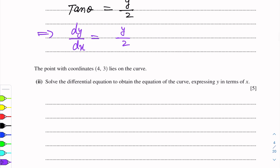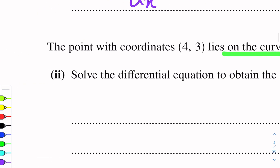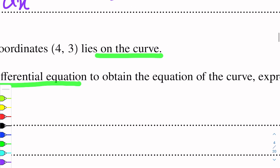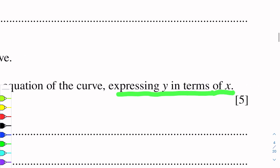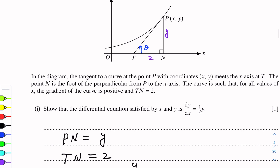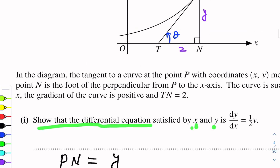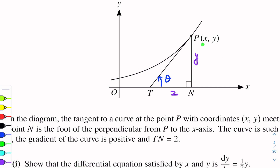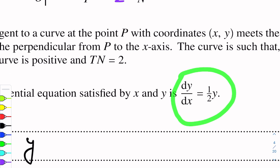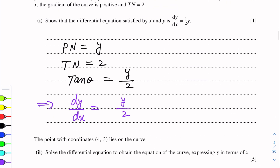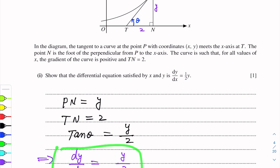The next part of this question is: the point with coordinates (4, 3) lies on the curve. Solve the differential equation to obtain the equation of the curve, expressing y in terms of x. We have shown that dy/dx = y/2. This is a differential equation and we will now solve it.